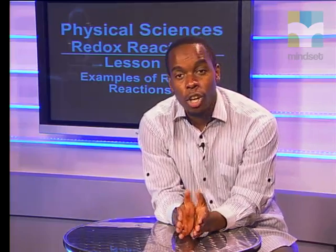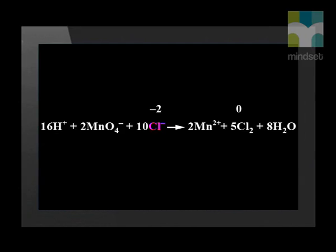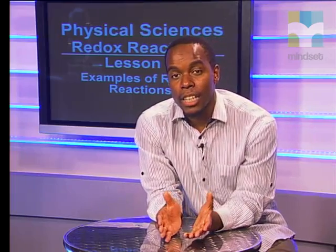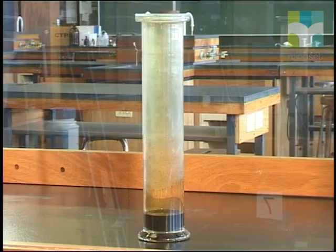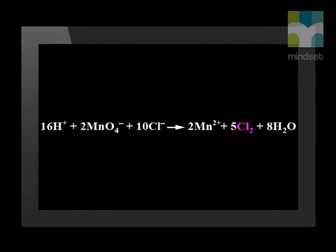Let's analyze the changes in oxidation numbers. The chloride ions go from −1 to 0. Remember, elements have an oxidation number of 0. Therefore, the chloride ion has lost an electron and has become more positive — the chloride ion has been oxidized. By the way, do you remember the greenish-yellow gas we saw? The greenish-yellow gas was the chlorine gas that was formed in this reaction.